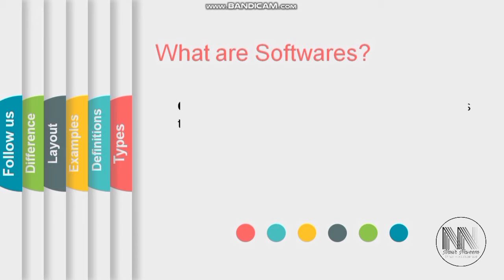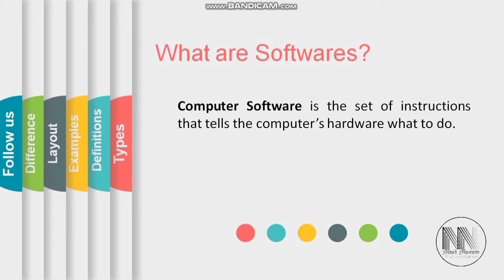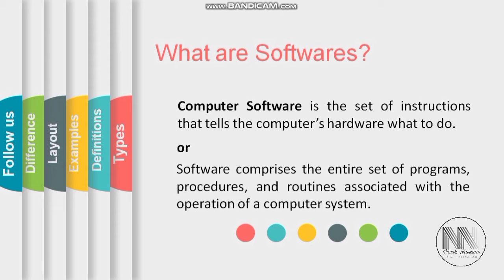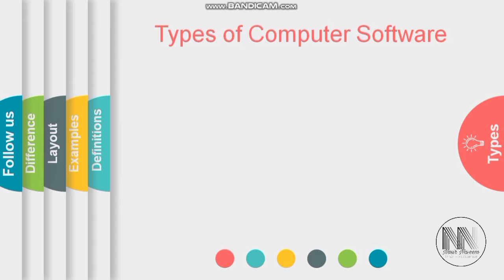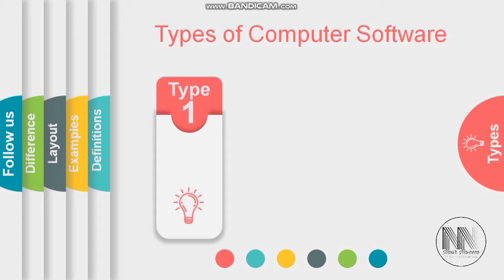To proceed further, it is important to know what software is. Computer software is the set of instructions that tells the computer hardware what to do. In other words, software comprises the entire set of programs, procedures, and routines associated with the operation of a computer system.